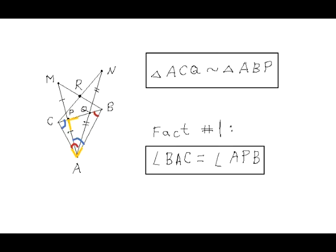because angle BAC from the triangle BAC equals 180 degrees minus one red and one blue angle. And the same is true for angle APB from the triangle APB, where this angle is also equal to 180 degrees minus one blue and one red angle.